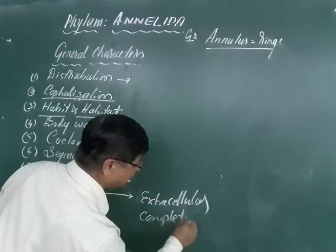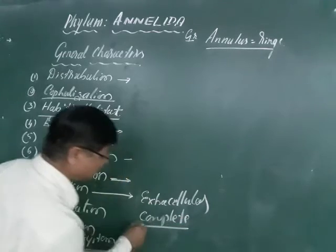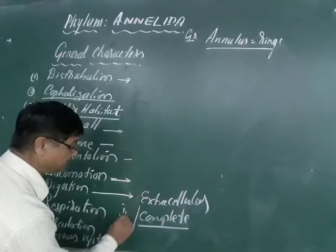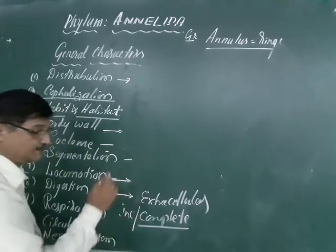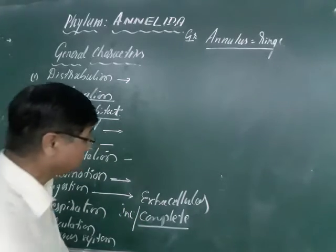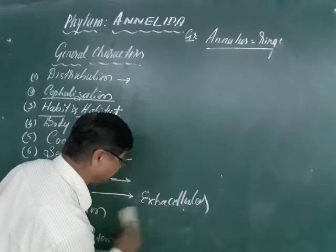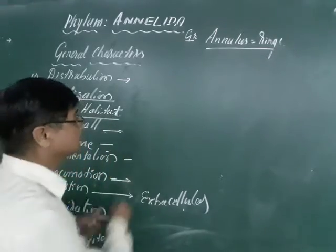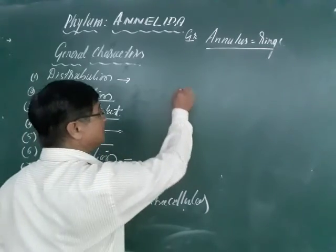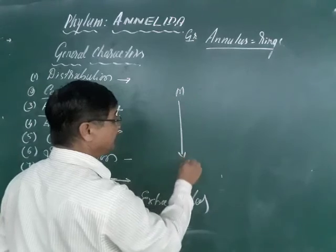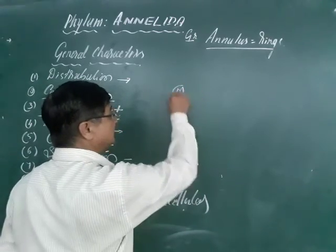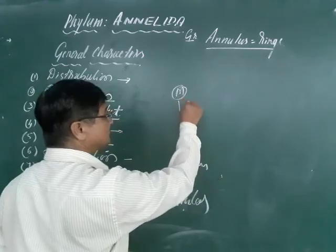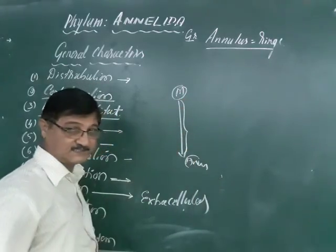What does complete mean? In lower forms the digestive system is incomplete — not completely well developed. Complete means the digestive system starts from the mouth to the anus. It starts from the mouth and opens at the anus. This is called the complete digestive system.